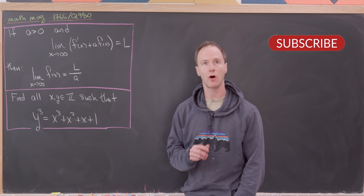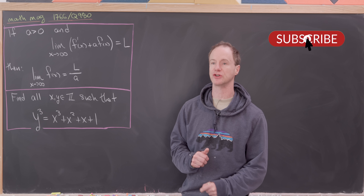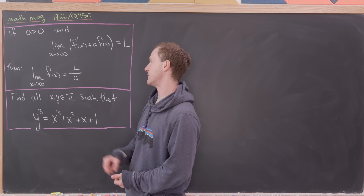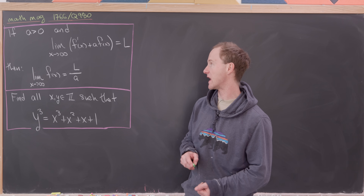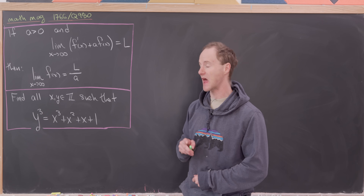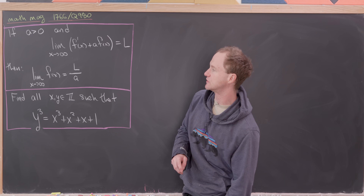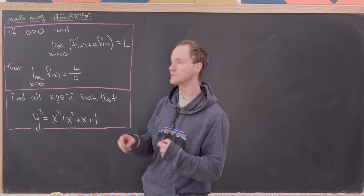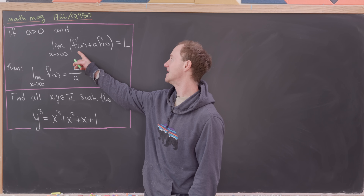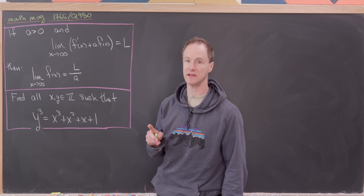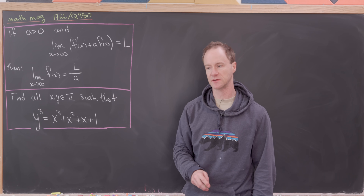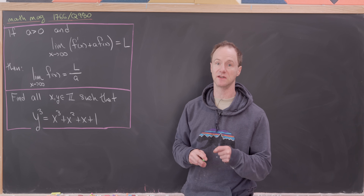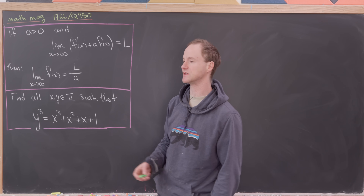The first one is almost like some sort of additive version of L'Hopital's rule. It says that if a is bigger than 0 and the limit as x goes to infinity of f'(x) plus a times f(x) equals L, then the limit as x goes to infinity of f(x) is L over a. This could apply to situations where one limit is easy to calculate but the other is difficult.